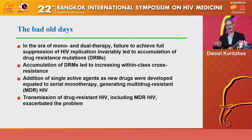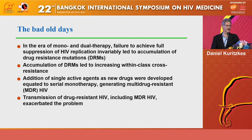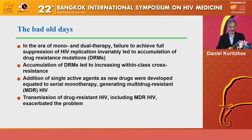For example, the more mutations that conferred resistance to AZT, the more likely the virus was to be resistant to stavudine, abacavir, and even tenofovir. Addition of single agents as new drugs were developed equated to serial monotherapy. People who started with zidovudine and then added lamivudine became resistant to both drugs; when indinavir was added, resistance emerged to the third agent as well, generating multi-drug resistant viruses, or MDR-HIV. There was also transmission of drug-resistant virus, including multi-drug resistant virus, which exacerbated the problem.